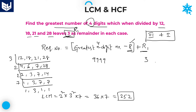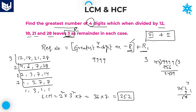Now divide 9999 by 252. 252 × 39 = 9828. Checking: 252 × 9 gives 2268; computing carefully, 252 × 39 = 9828. Subtracting 9999 minus 9828 gives a remainder of 171. So 171 is the remainder obtained by dividing the greatest four-digit number 9999 by the LCM 252.